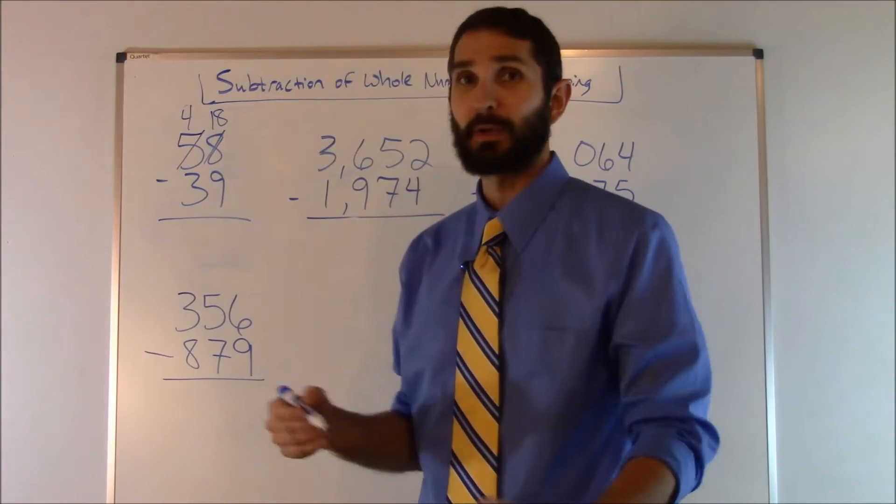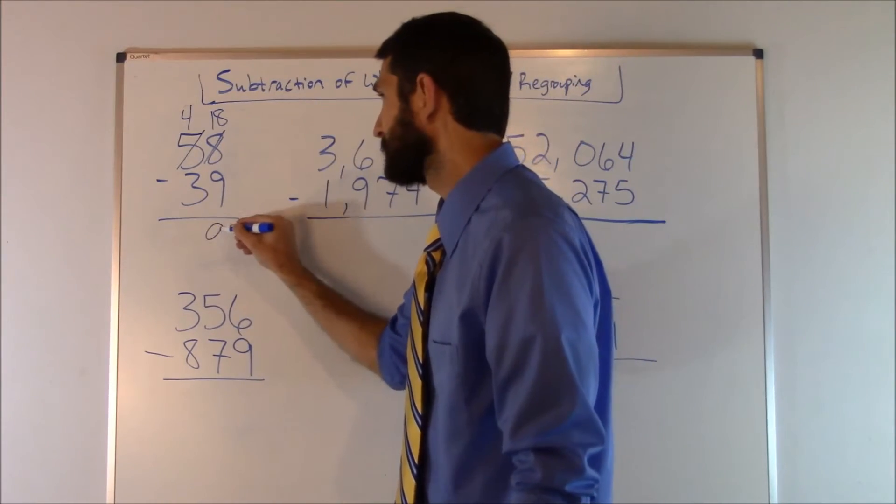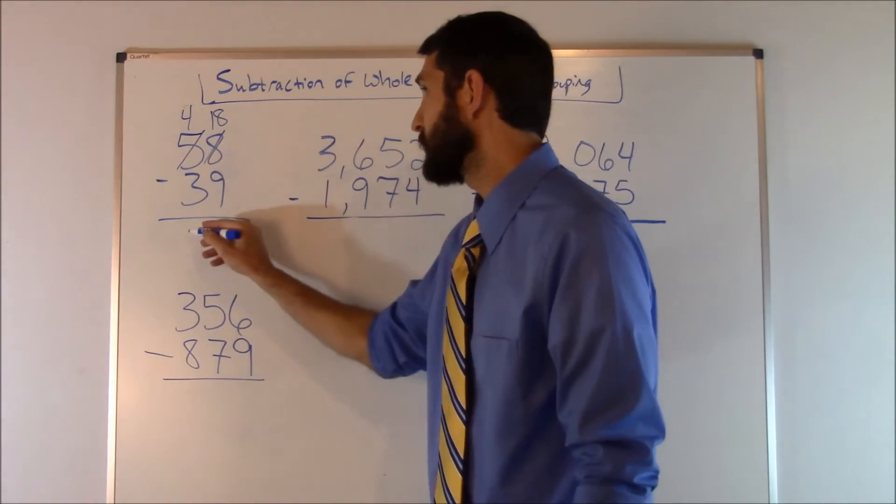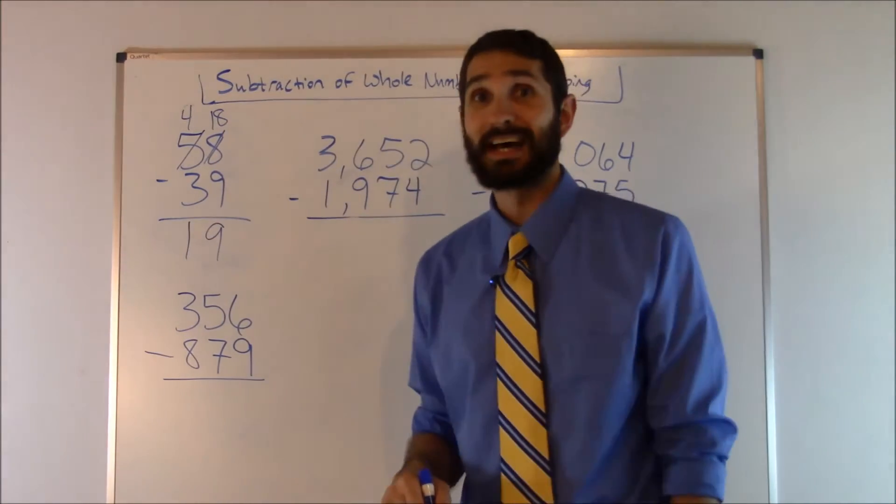Now 18 minus nine, we can solve that. That's nine. We move to the next column: four minus three. That's going to give us a one. So the answer to that problem is 19.